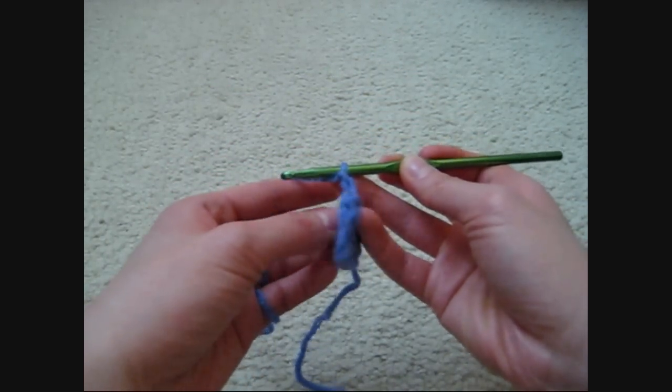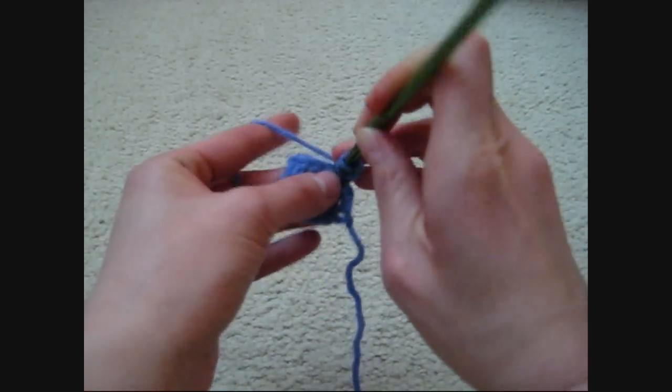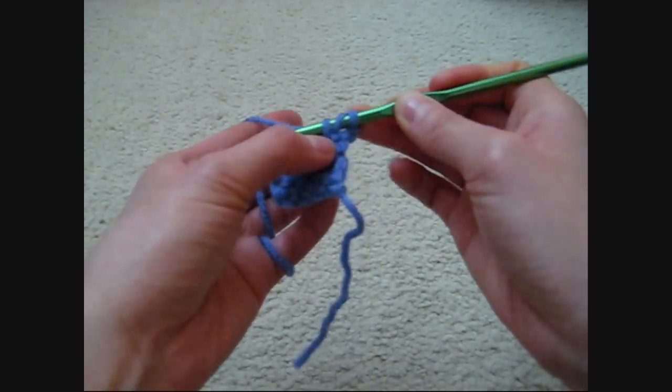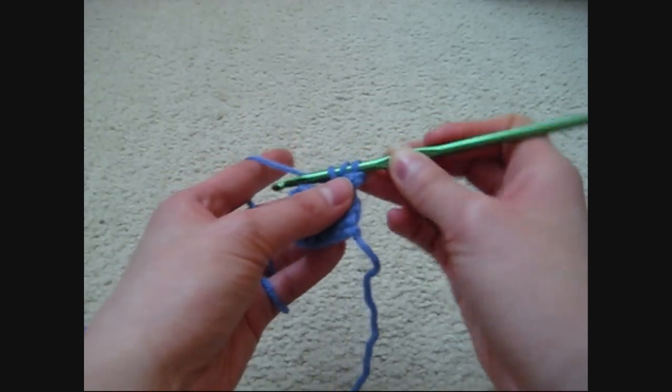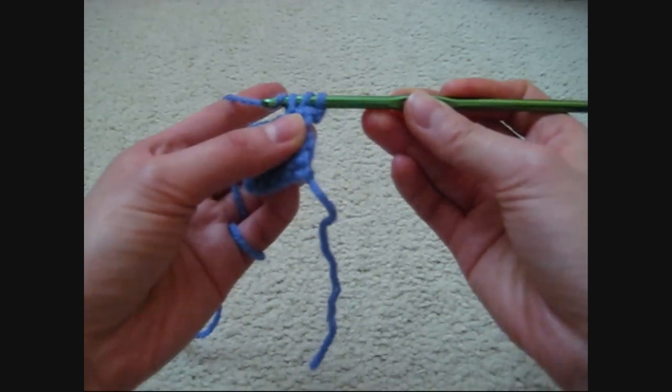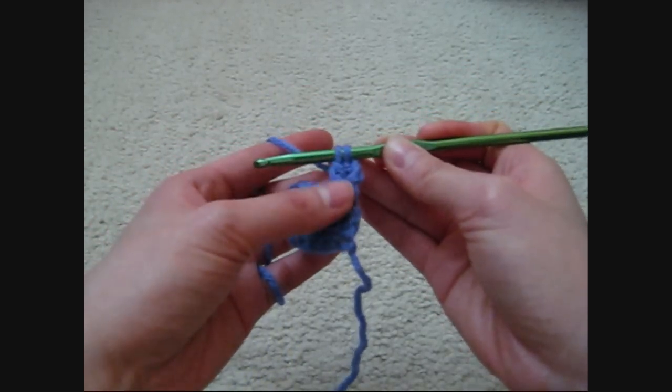After you do that, turn your work around, yarn over, and go through the first stitch. Now you have 3 loops on your crochet hook. Yarn over, and this time pull the yarn through 2 loops only.